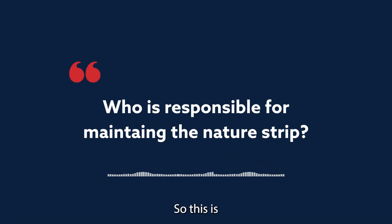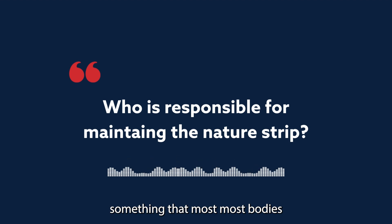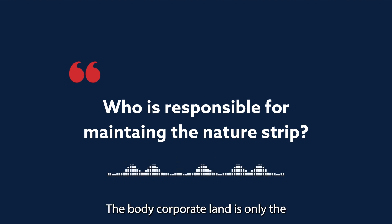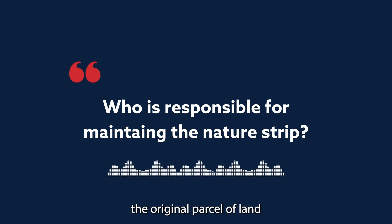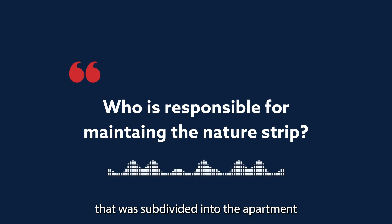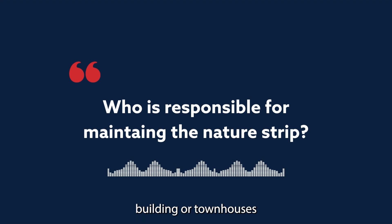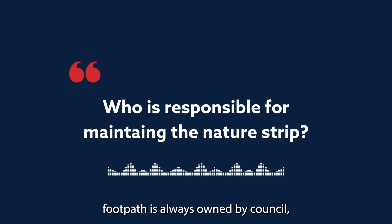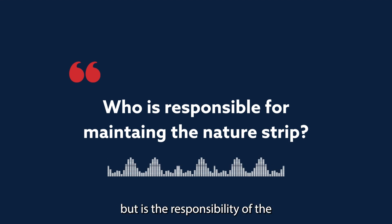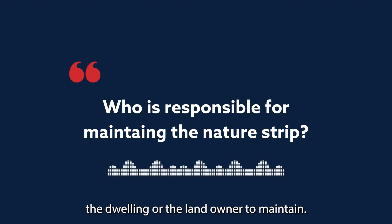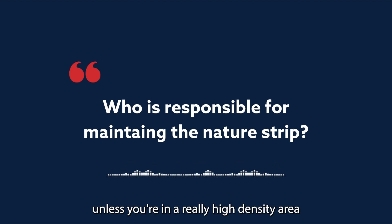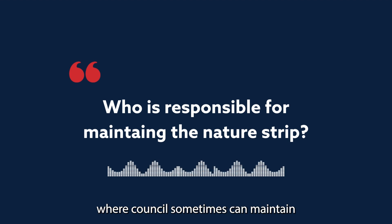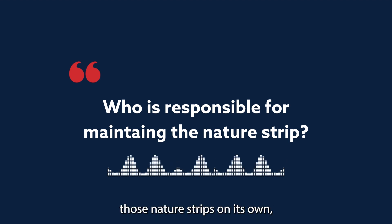This is something most bodies corporate have in common. The body corporate land is only the original parcel of land that was subdivided into the apartment building or townhouses. The council nature strip or council footpath is always owned by council, but it's the responsibility of the dwelling or landowner to maintain — unless you're in a high-density area where council sometimes maintains those nature strips itself.